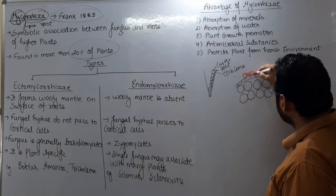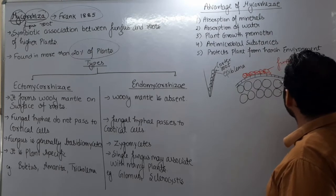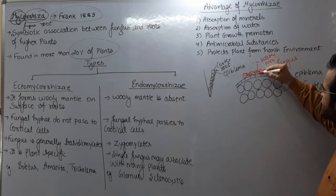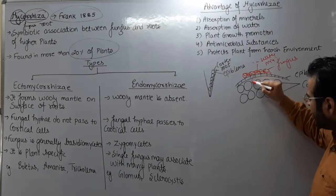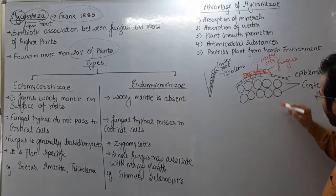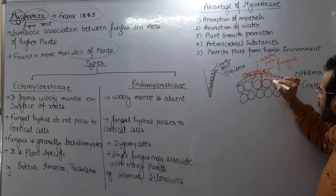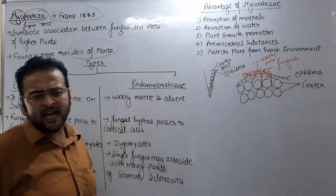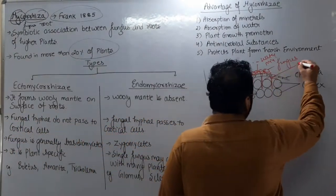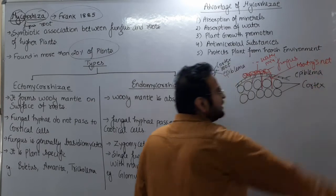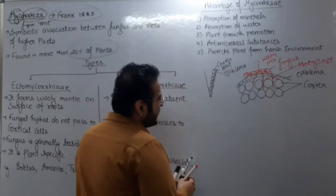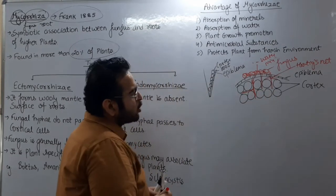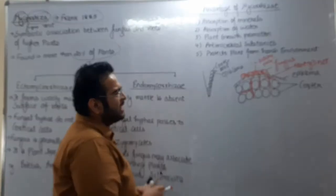Aur agar is ke upar fungus lag jaye, to yahan saare mein fungus lag gayi. Yeh jo fungus hai, is ki madad se water aur minerals absorb karti rahegi aur absorb kar ke yeh plant ko deti rahegi. Kuch fungus ke hyphae yahan cortex ke cells ke beech mein aa jayenge aur ek jaal ki tarah yahan sar failayenge. Is jaal ko kaha jata hai 'Hartig net'.